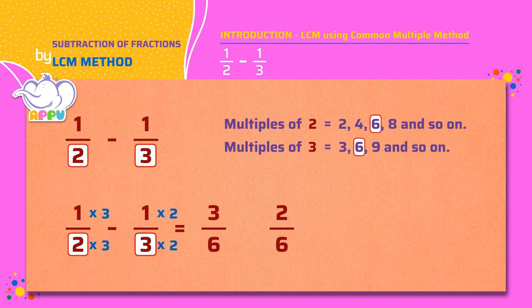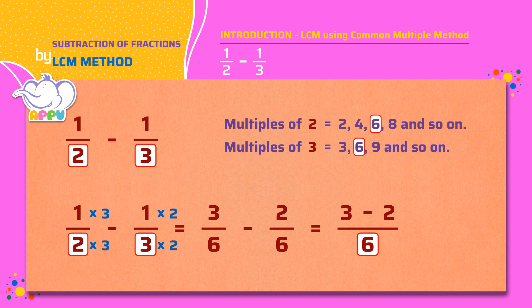This becomes 3 by 6 minus 2 by 6. Now the denominators are the same for both the fractions, that is 6. We write the denominator as 6 and we subtract the numerators. 3 minus 2 equals 1. The answer is 1 by 6.